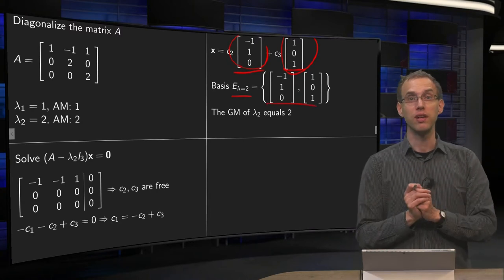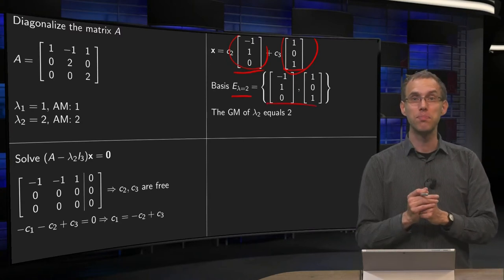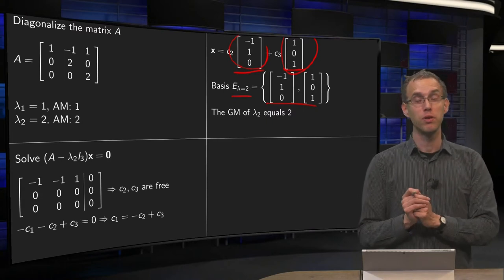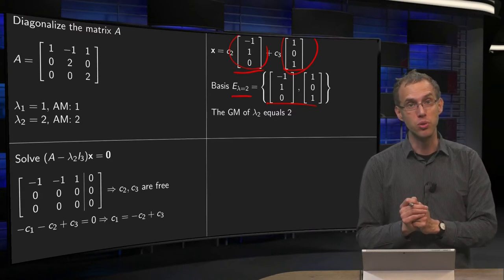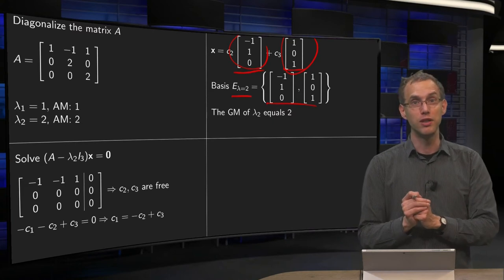So you see that for lambda equals 2, we have two independent eigenvectors, so the geometric multiplicity of lambda 2 equals 2, equal to its algebraic multiplicity.